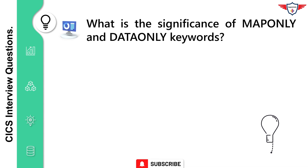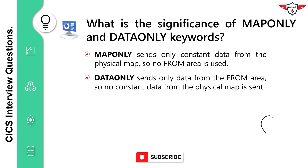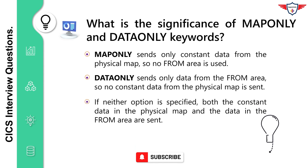What is the significance of the Map Only and Data Only options in the Send Map Command? The Map Only option sends only constant data from the physical map, so you don't have to code the FROM option. The Data Only option sends only the data in the symbolic map — no constant data from the physical map is sent. If neither option is specified, both the constant data in the physical map and the data in the FROM area are sent.